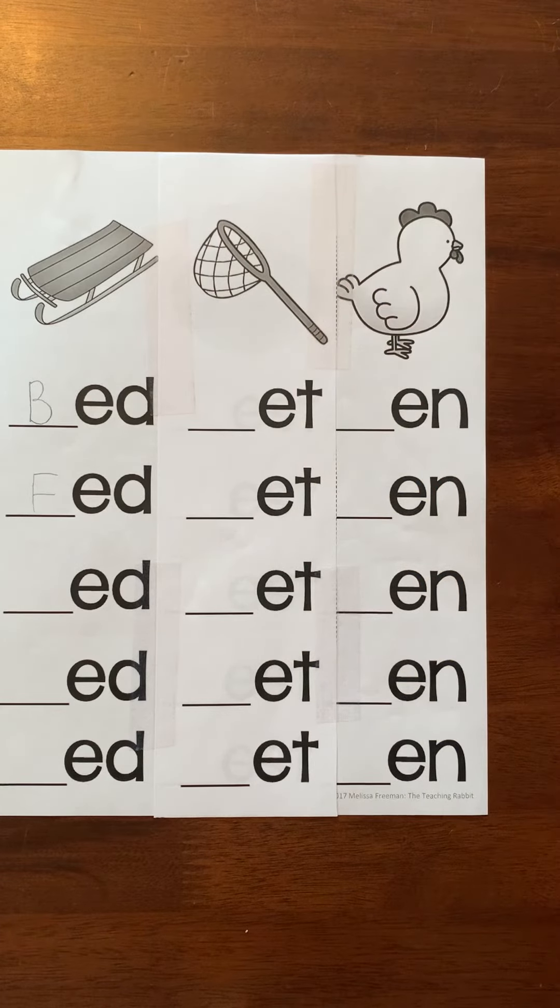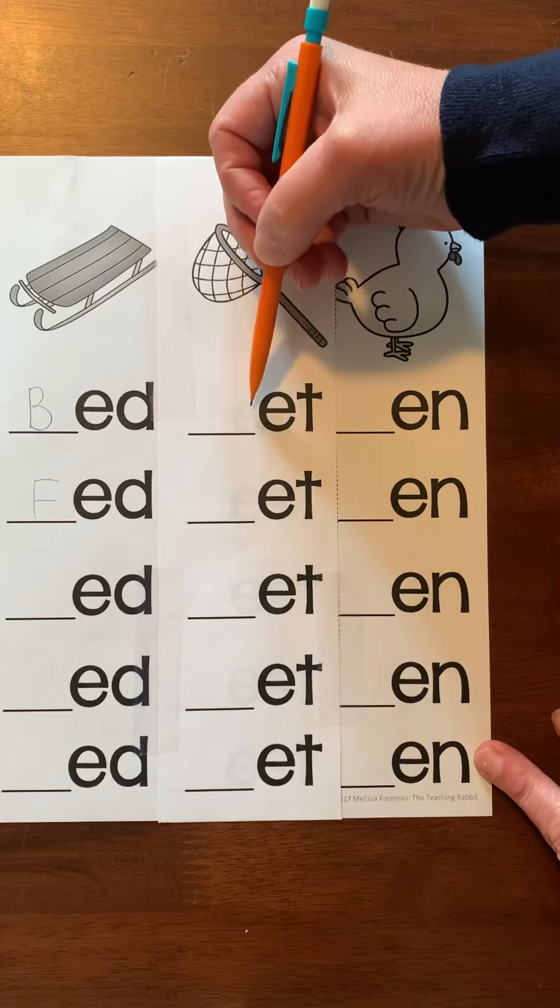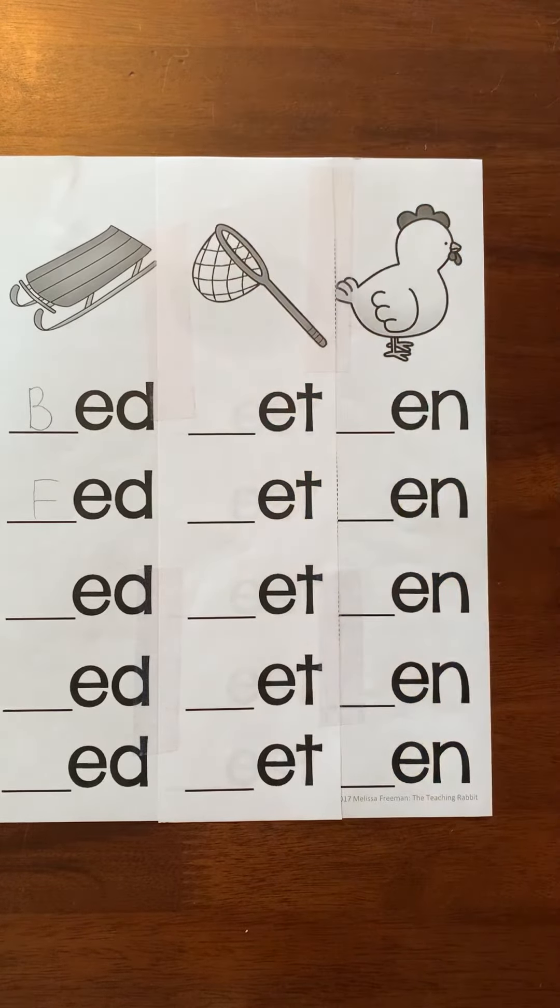You're going to try and make many words with the baby E. Remember, baby E says /ɛ/, /ɛ/, /ɛ/. Give it a try, yellow group.